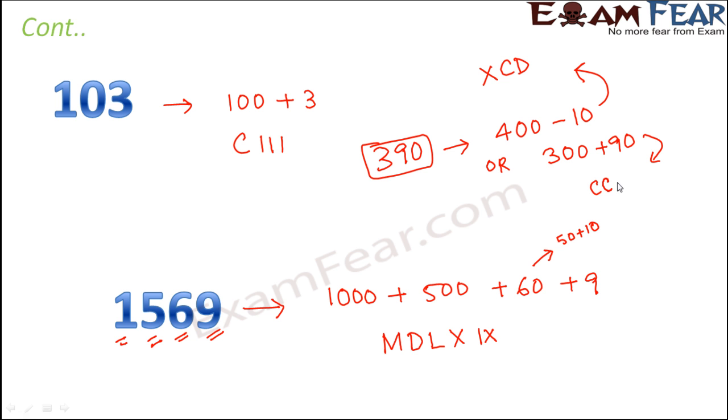300 is 100 plus 100 plus 100, so it will be CCC. That is 300 plus 90. How do we write 90? 90 is 100 minus 10. So this is how we write 90. So 90 is written on the right-hand side of 300. So that is another way.